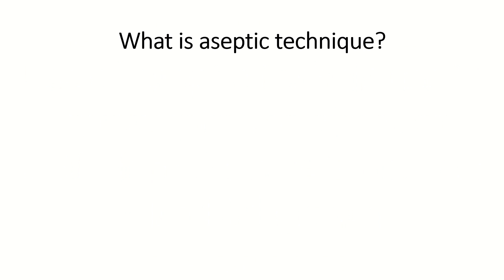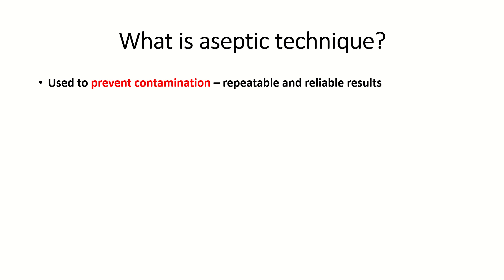So let's go straight into it. First of all, I'm going to talk about what actually is aseptic technique. Aseptic technique is something that is used to prevent contamination. Preventing contamination is an essential part of this practical as it produces repeatable and reliable results, because if your apparatus was contaminated with bacteria, obviously that would affect your results. The points I'm about to list are worth remembering as you may be asked them in the exam.